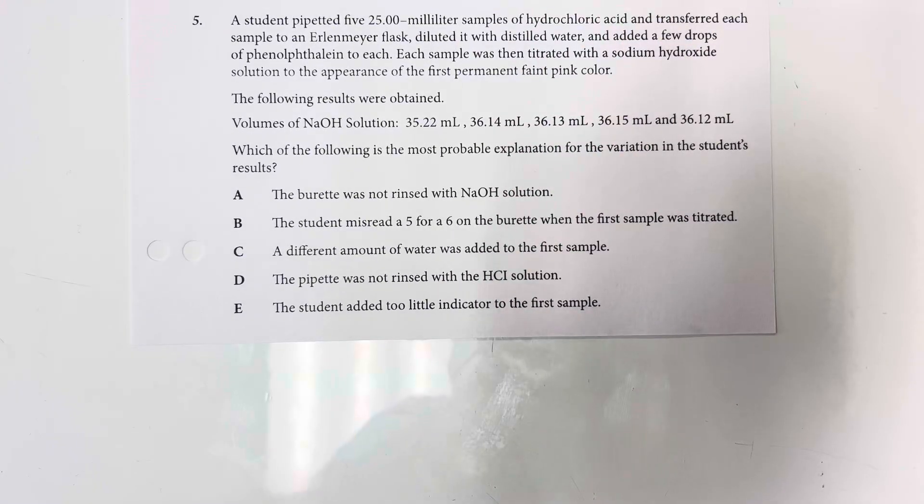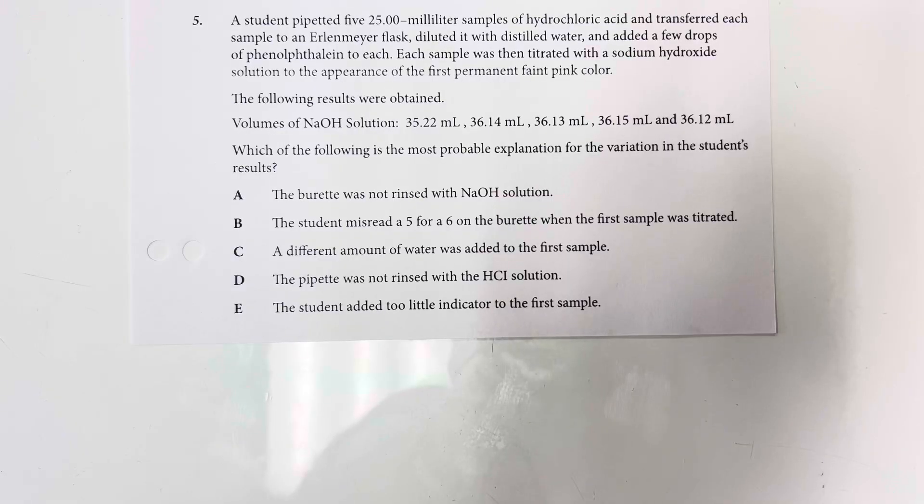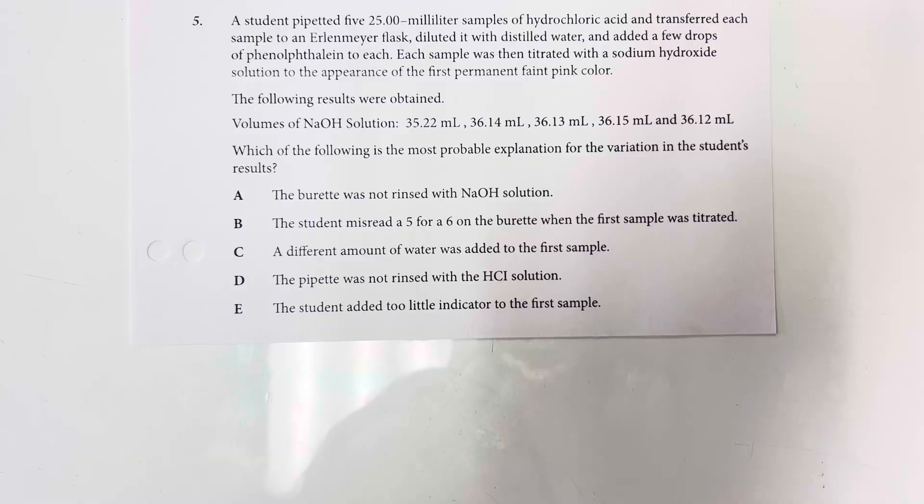A student pipetted five 25 milliliter samples of hydrochloric acid and transferred each sample to an Erlenmeyer flask, diluted it with distilled water, and added a few drops of phenylphthalein to each. Each sample was then titrated with a sodium hydroxide solution to the appearance of the first permanent faint pink color. The following results were obtained. Volumes of sodium hydroxide solution were 35.22 mils, 36.14 mils, 36.13 mils, 35.15 mils, and 36.12 mils. Which of the following is the most probable explanation for the variation in the student's result.